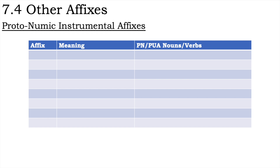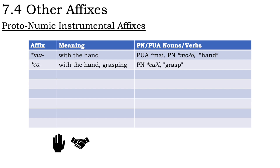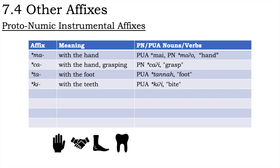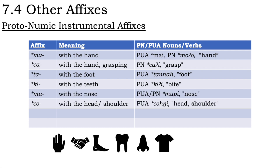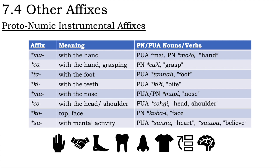Instrumental affixes in Numic. In many cases, the reconstructed Proto-Numic instrumental affixes have clear similarities to reconstructed Proto-Numic or Proto-Uto-Aztecan independent noun or verb roots: ma- 'with the hand,' cha- 'with the hand or grasping,' da- 'with the foot,' ge- 'with the teeth,' mu- 'with the nose,' cho- 'with the head or shoulder,' go- 'top or face,' and su- 'with mental activity.'